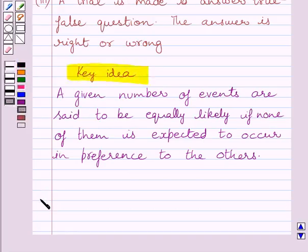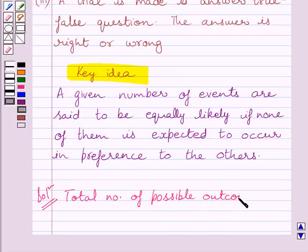Let us now start with the solution. Now, in the experiment, a trial is made to answer a true-false question. The answer is right or wrong. We know there are total two outcomes. In the answer, they are right or wrong. So, we can write, total number of possible outcomes is equal to 2.